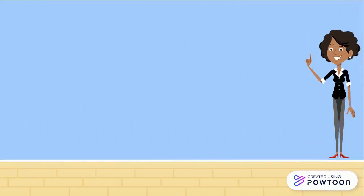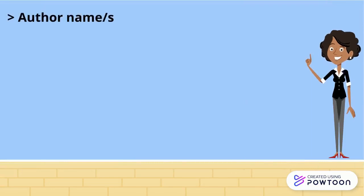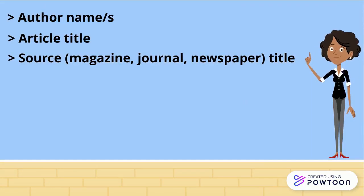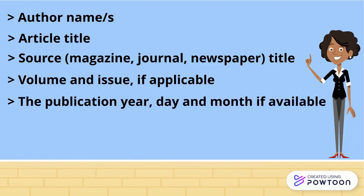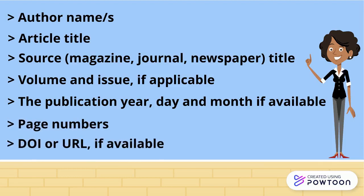First, gather your information. You'll need the author name or names, the title of both the article and the source where it was published — such as a magazine, journal, or newspaper — the volume and issue if applicable, the publication year and day and month if available, the page numbers, and a digital object identifier (DOI) or URL if available.